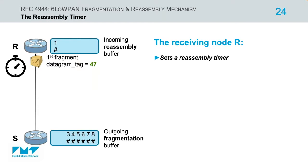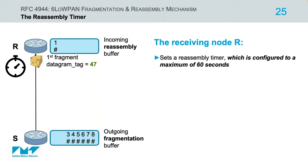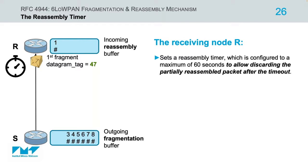Once the receiver successfully receives a new link-layer fragment with a certain datagram tag, it initiates a reassembly timer. The value of this timer must be configured to a maximum of 60 seconds, which is the timeout of the IPv6 reassembly procedure. If the IPv6 datagram has not been reconstructed within 60 seconds, the reassembly operation is aborted and the received fragments are discarded.